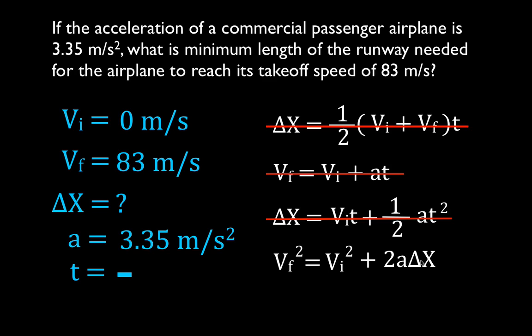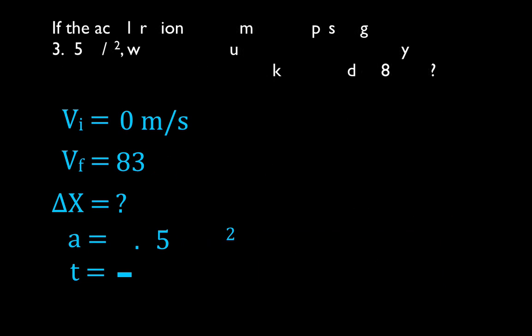This has delta x, which is what we're solving for. We know the final velocity, we know the initial velocity, and we know the acceleration. So therefore this is our equation. Let's take it with us to the next slide.